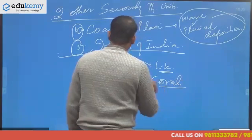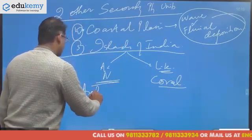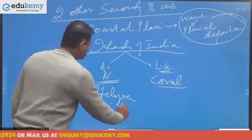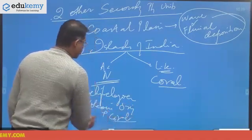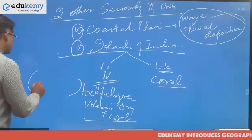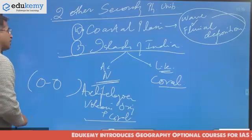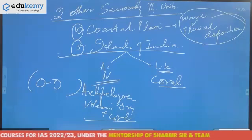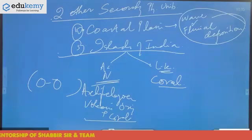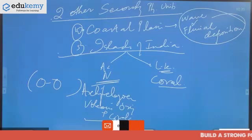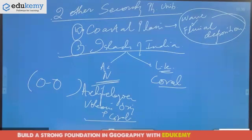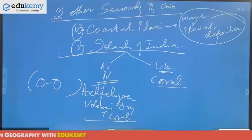The Andaman and Nicobar Islands are archipelagos of volcanic origin and also have coral reefs, formed at the margins of ocean-ocean collision involving the Indian-Australian plate and the Pacific-Eurasian plate. The Lakshadweep Islands are entirely coral islands. Coastal plains have both wave and fluvial depositions.